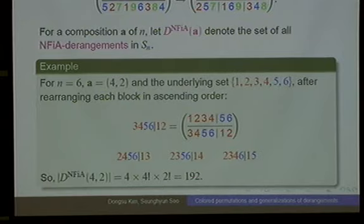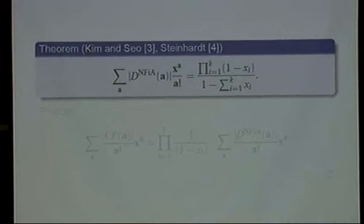Wei and Steinhardt independently showed the exponential generating function for this case. The proof is almost the same as before, so I can use it too. Since this is the ascending case, if phi is an element of D — no fixed point, ascending order — and the second block in the second line is one, two, six, eight, then there is no fixed point here.